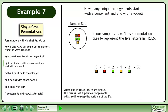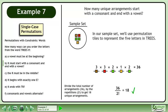Watch out! In TREES, there are two E's. This means that duplicate arrangements will arise if we swap the positions of the E's. Divide the total number of arrangements, 36, by the repetitions, 2!, to get 18 unique arrangements.